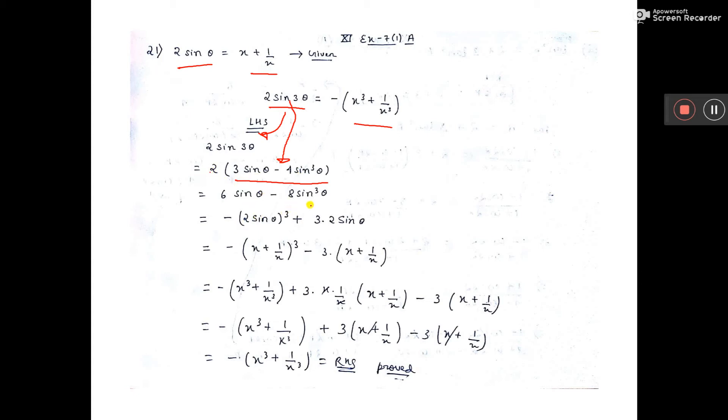Now multiply this inside. This one you bring front, sin theta whole cube, and here 3 into 2 sin theta. Now 2 sin theta value is x plus 1 by x, and 2 sin theta is x plus 1 by x.